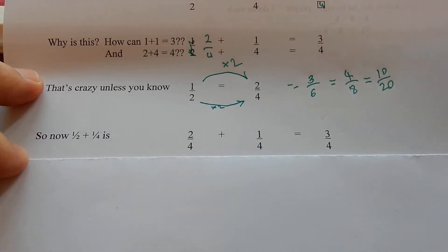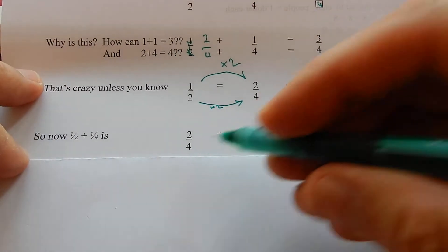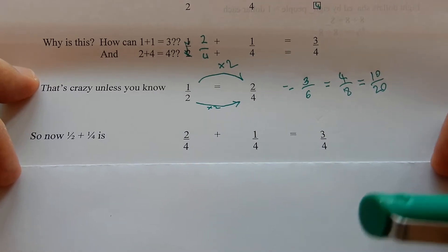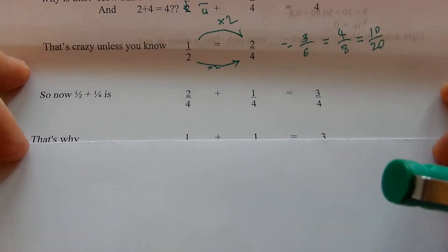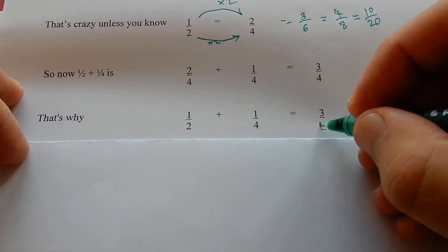So now a half plus a quarter is two quarters plus one quarter is three quarters. Yeah, makes sense. That's why a half plus a quarter is three quarters.